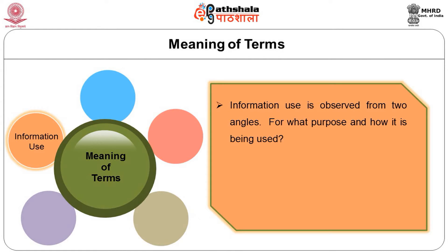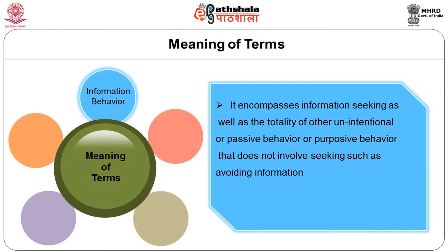Information use can be understood from two angles: one is from the purpose for which information is being created, and another from the point of view of how it is being used by the user and for what purpose. Another term — information behavior — encompasses information seeking as well as the totality of other unintentional or passive behaviors that do not involve seeking, such as avoiding information, etc. These are all terminologies one has to understand before going into information use studies.